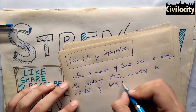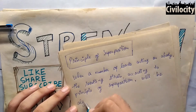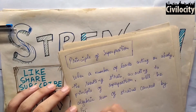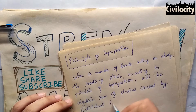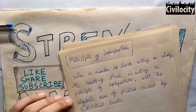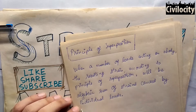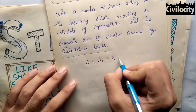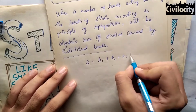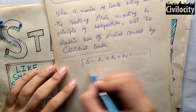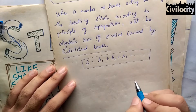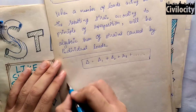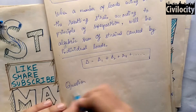Our next topic is the Principle of Superposition. Each section of the body contributes to the total strain of the body. In simple terms, if there are direct forces acting on different cross sections, then the total deformation of an elastic body will be equal to the algebraic sum of the deformations of the individual sections produced by each load.